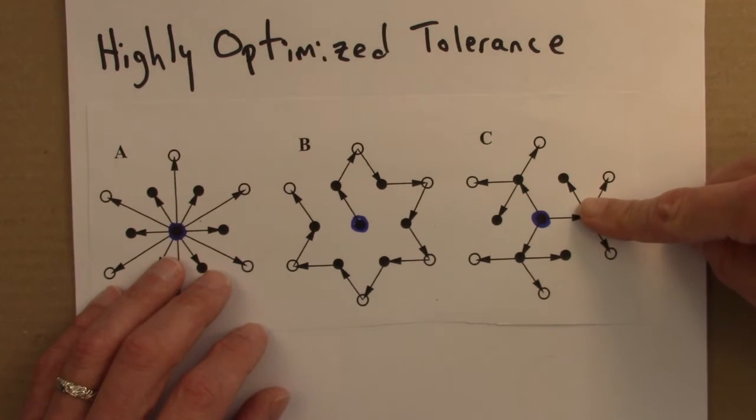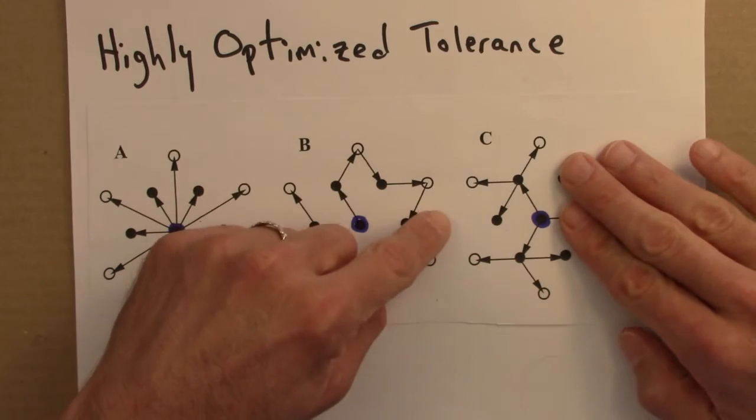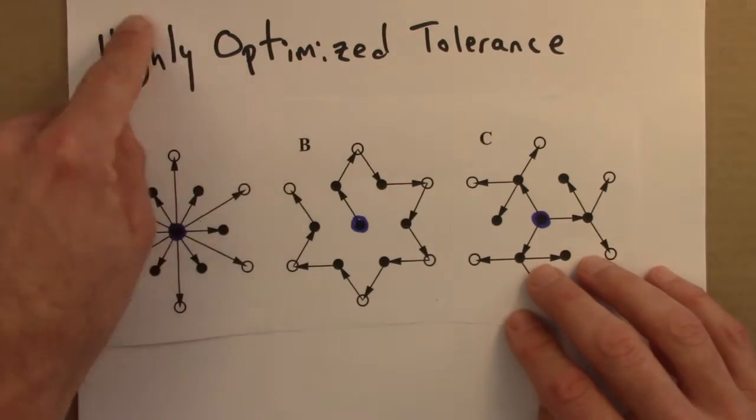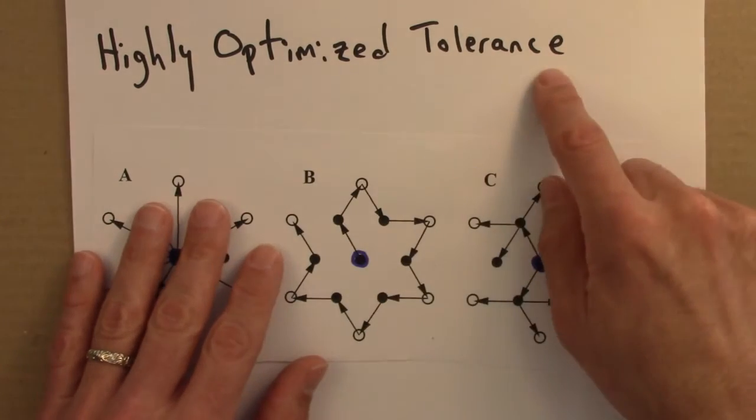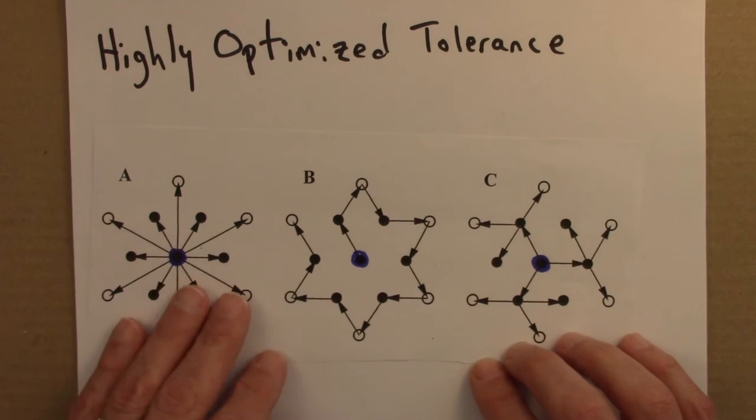but it only affects a chunk of the network. It's not going to affect the entire network. What these models tend to show is that if you optimize something to be tolerant to random failure, you often get power law behavior or approximate power law behavior as a result.